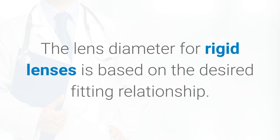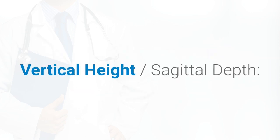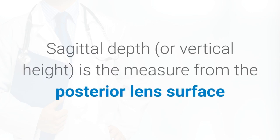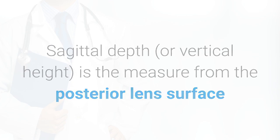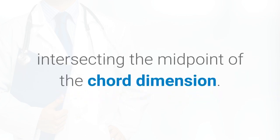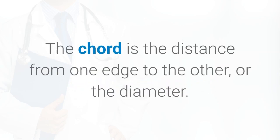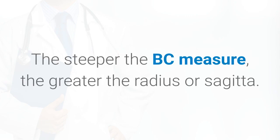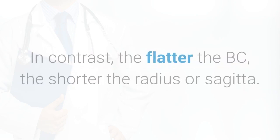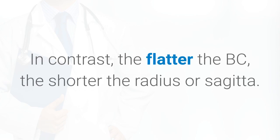The lens diameter for rigid lenses is based on the desired fitting relationship. Vertical height, also called sagittal depth, is the measure from the posterior lens surface intersecting the midpoint of the chord dimension — the chord being the distance from one edge to the other, or the diameter. The steeper the base curve, the greater the sagittal depth; conversely, the flatter the base curve, the shorter the sagittal depth.